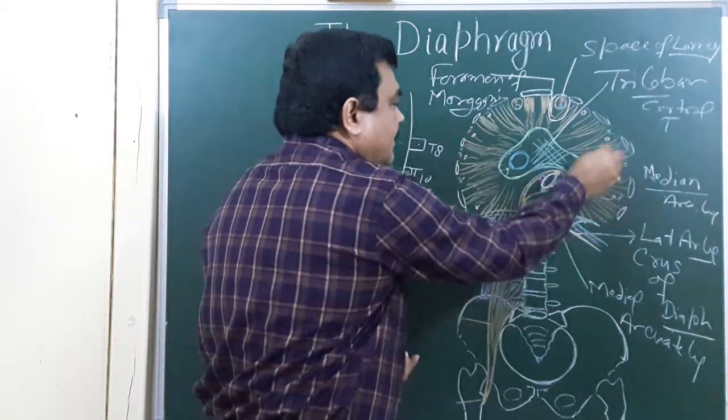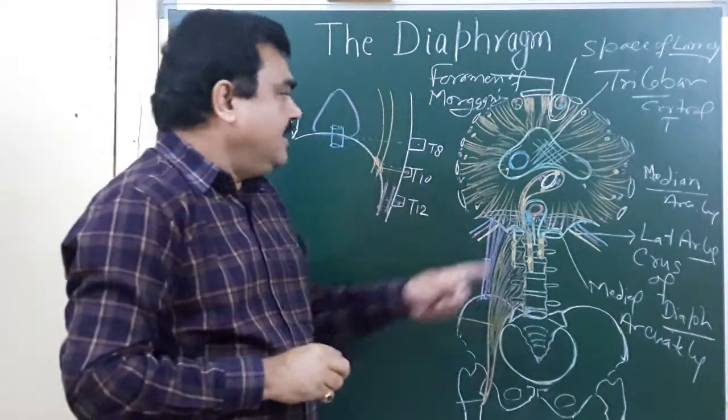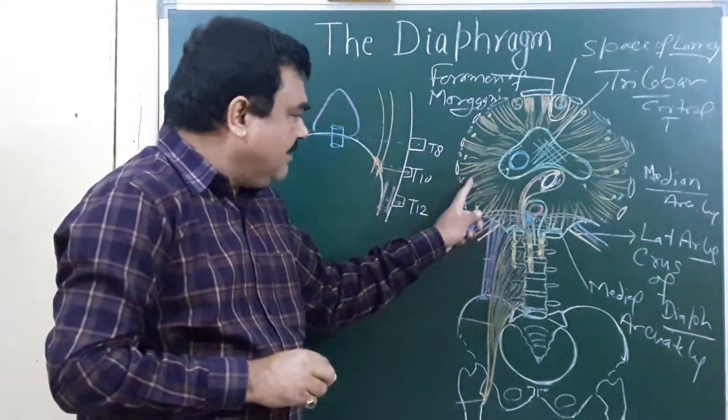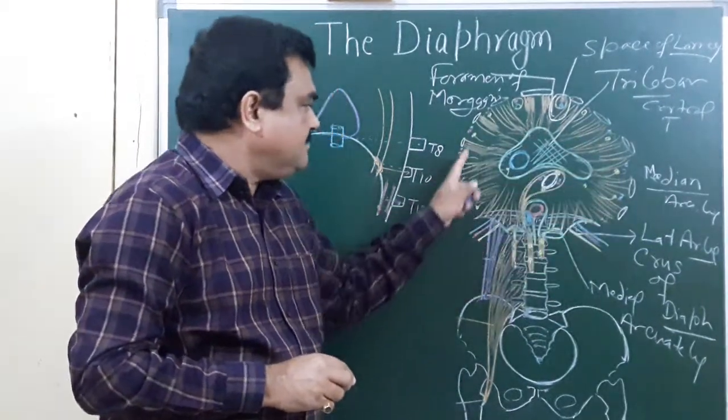These nerves. So the center part is supplied by frenic nerve, peripheral part is supplied by the intercostal nerve of the space.